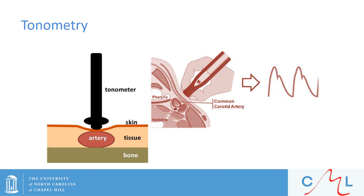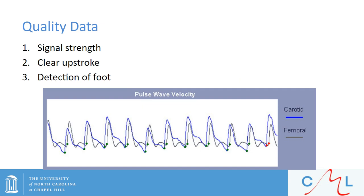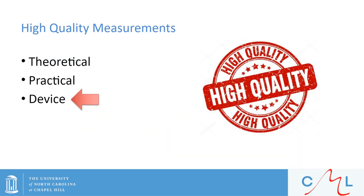With respect to anatomy, we should understand what we're actually looking for — knowing what to do with that artery, why we're compressing it and where, to ensure we can get a high quality reading. We also need to make sure we can understand what is a good waveform or not in real time. We want to look for adequate signal strength, make sure the waveform has a clear upstroke, and if the particular device does it, make sure it is identifying the correct foot on the waveform.